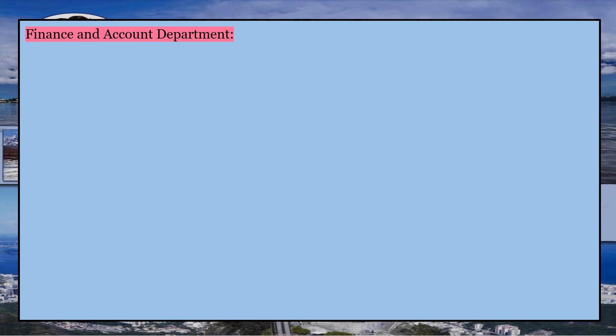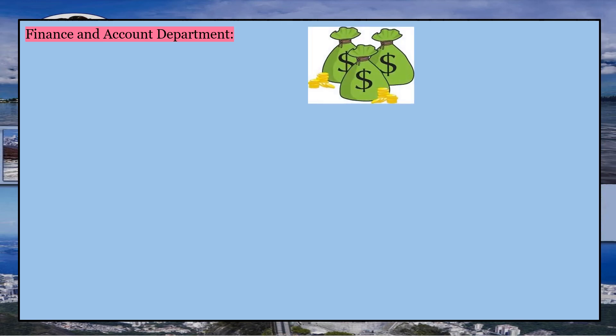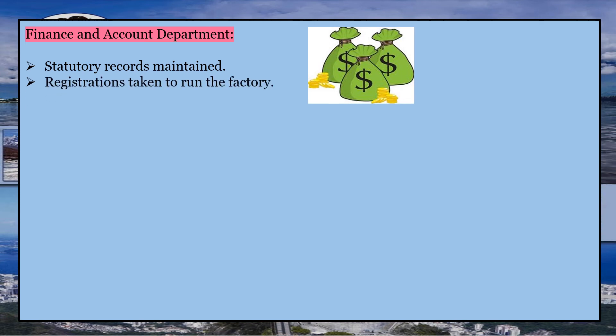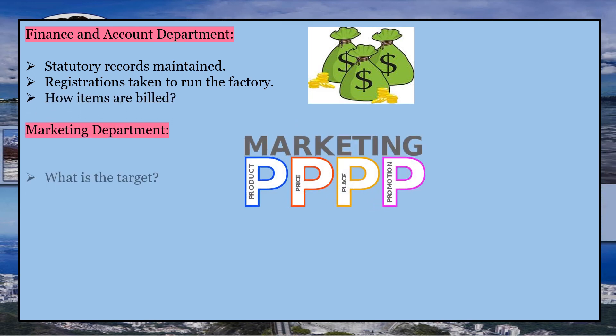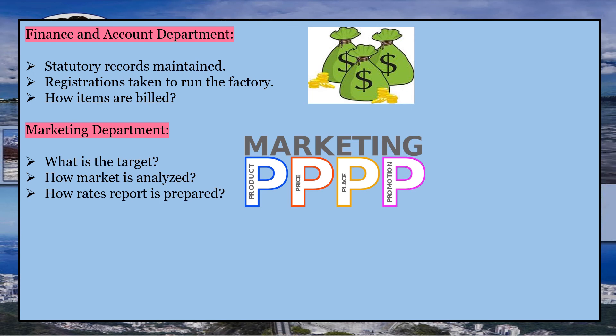The finance or accounts department: when you visit, you may ask questions with regards to statutory records maintained, registrations taken to run the factory, and how items are billed. Then in the marketing department, you can ask questions like: who is the head of the department? What is the target? How is the market analyzed? How is the rates report prepared? How are incentives structured?